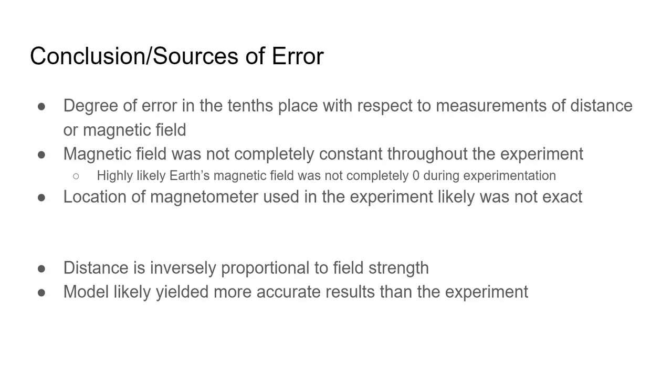And to conclude, distance is inversely proportional to field strength. And then the model likely yielded more accurate results than the experiment since the earth's magnetic field still had an effect, even though it was accounted for.